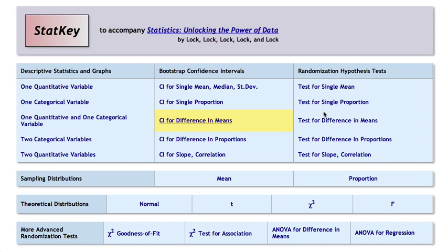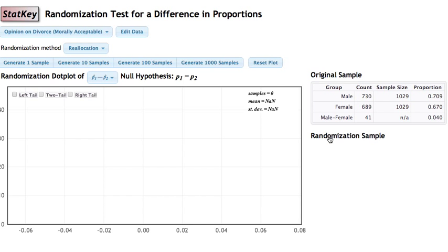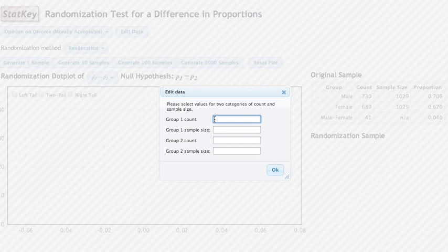Let's go to the test for a difference in proportions on the far right column in StatKey, because we are comparing two proportions. We'll click on edit data. For group one, let's call that the electrical stimulation group. 12 individuals out of 20 were able to solve this problem that required fresh insight. For the sham group, only 4 out of 20 were able to solve the problem.